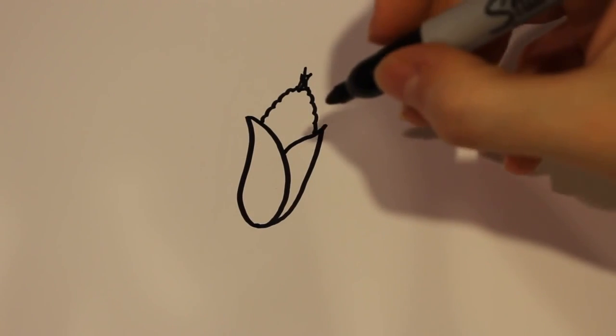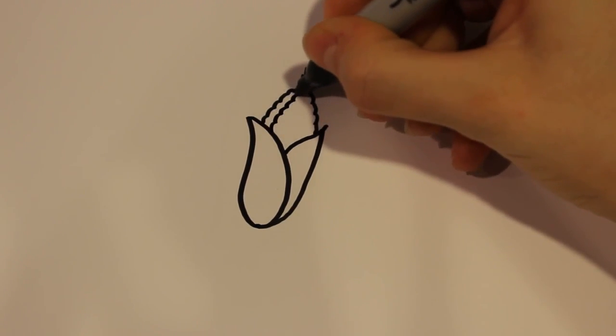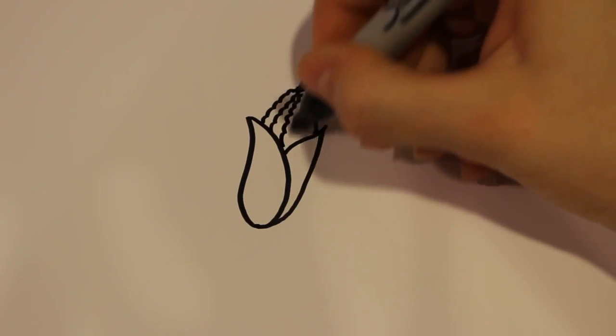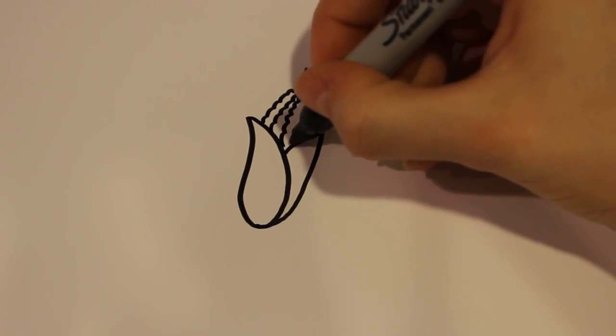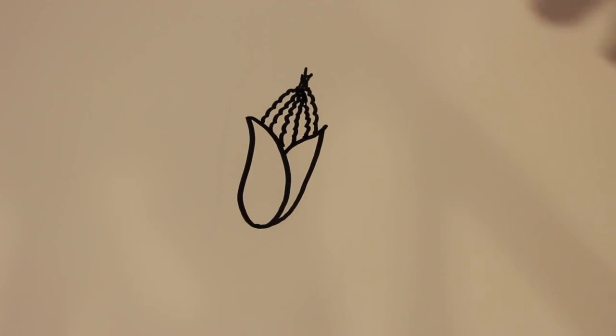And then for the detail on the corn I'm just going to follow the same curve and just add a few more lines like that in. And then right when I get to the middle I'm going to turn around and face the other way just like that.